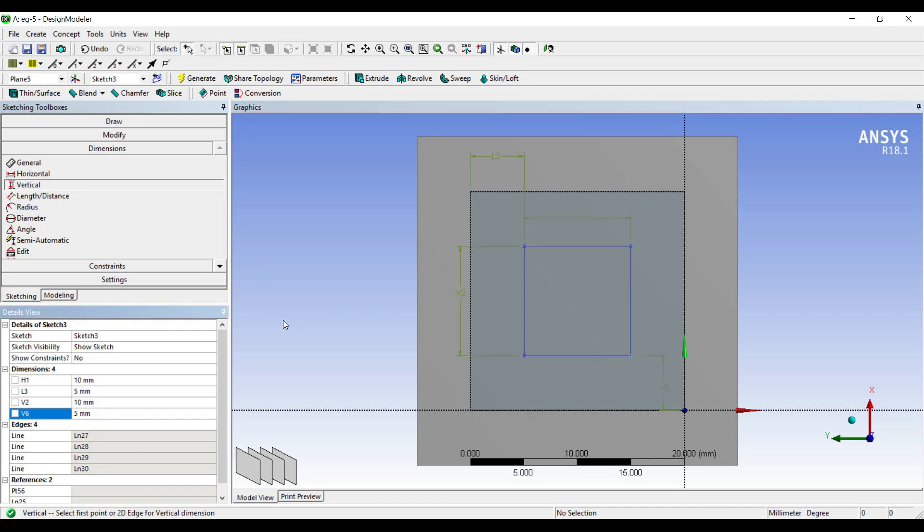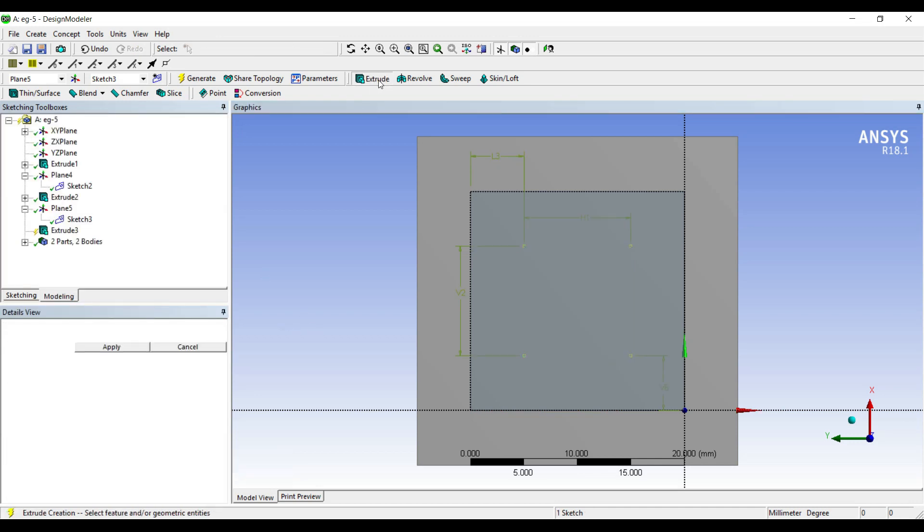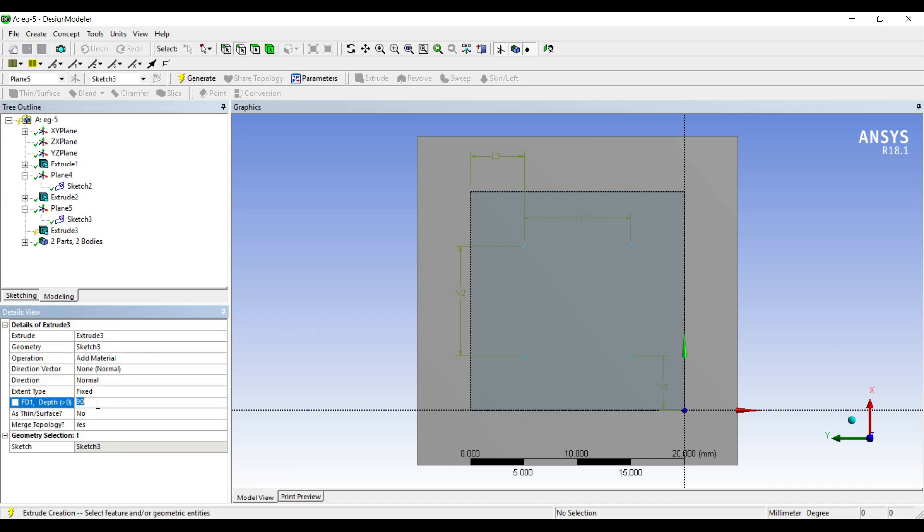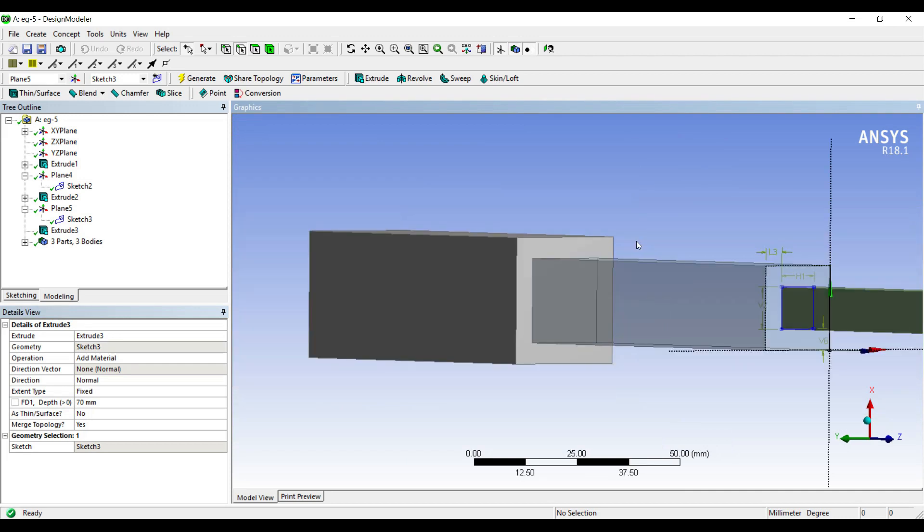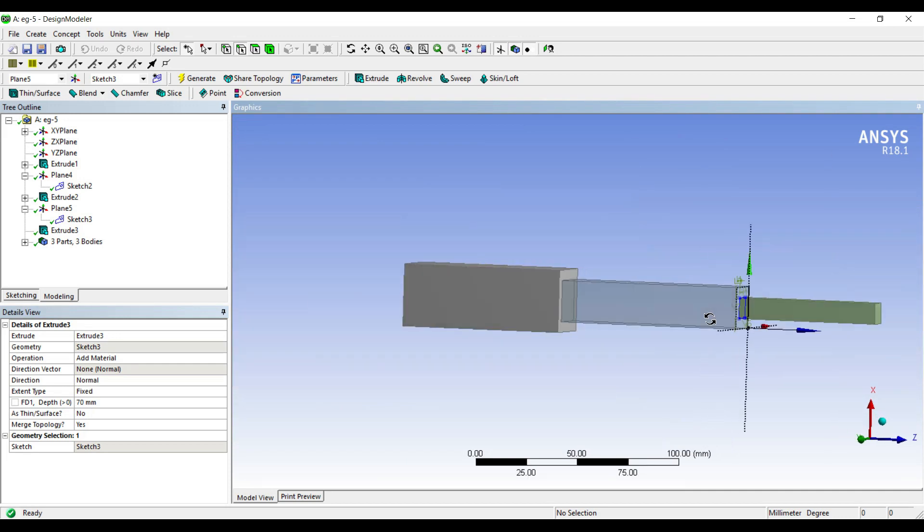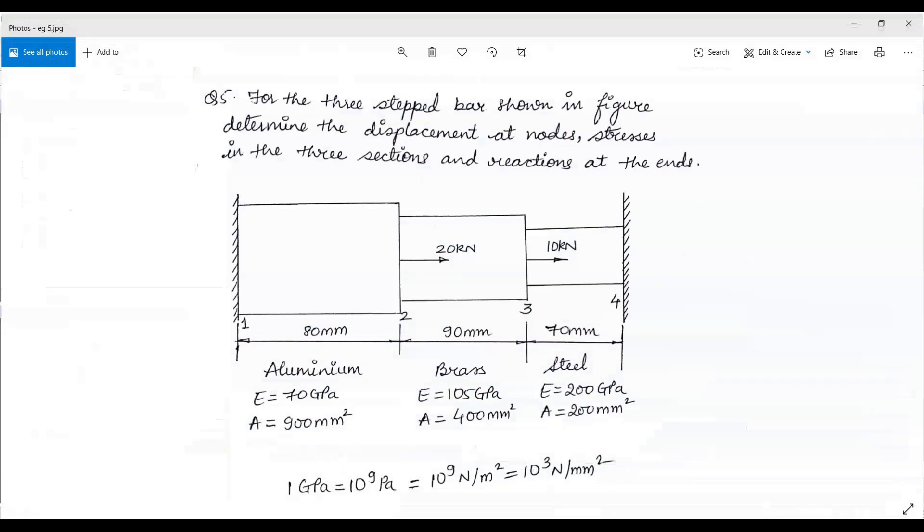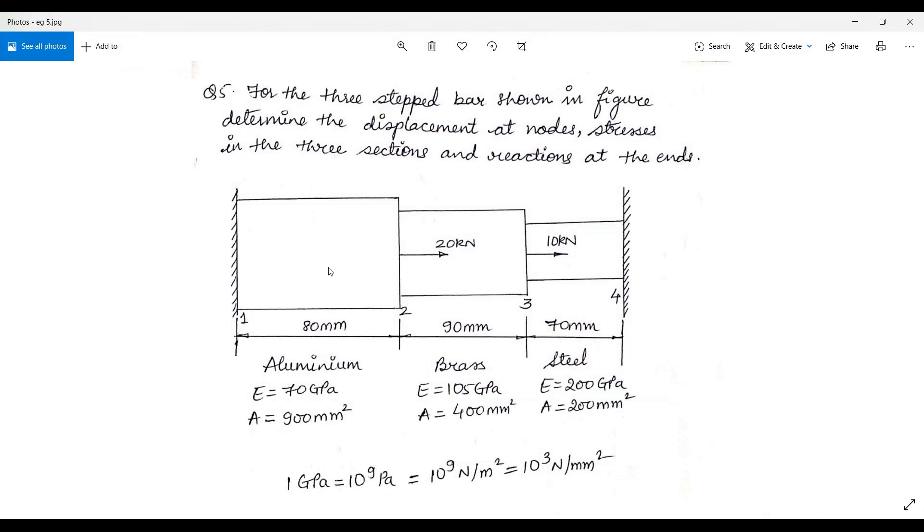Extrude, apply, distance 70, generate. This is my geometry. This is exactly the way it is supposed to be, so I am done with my geometry.